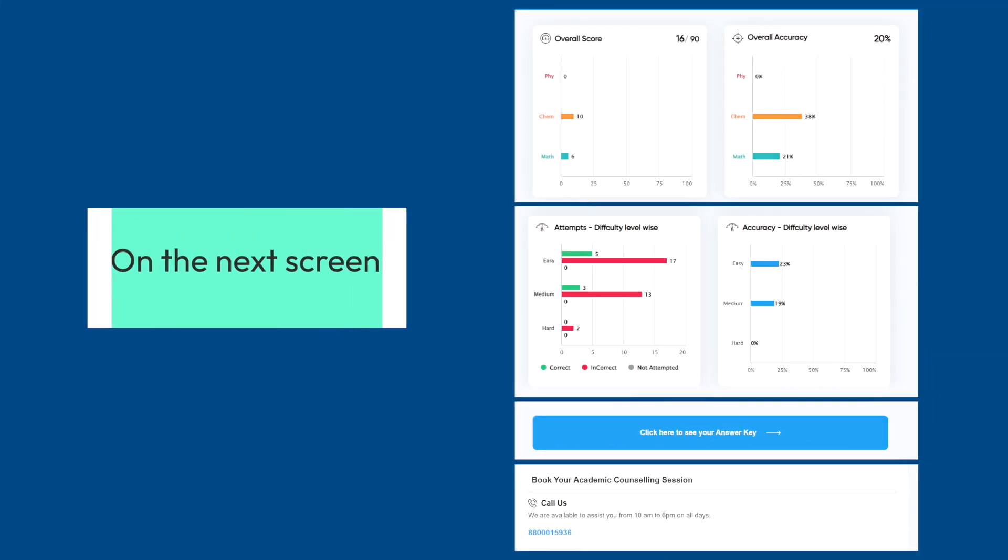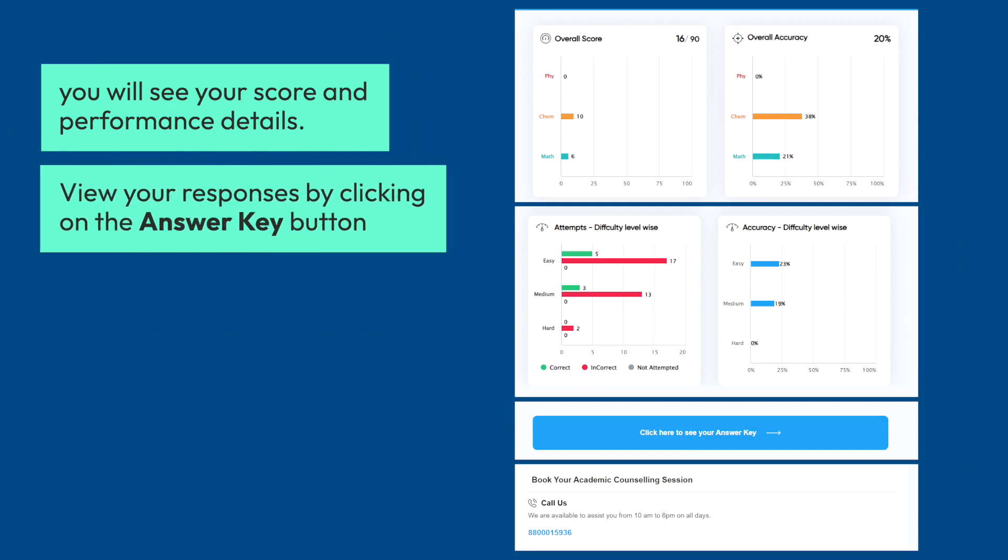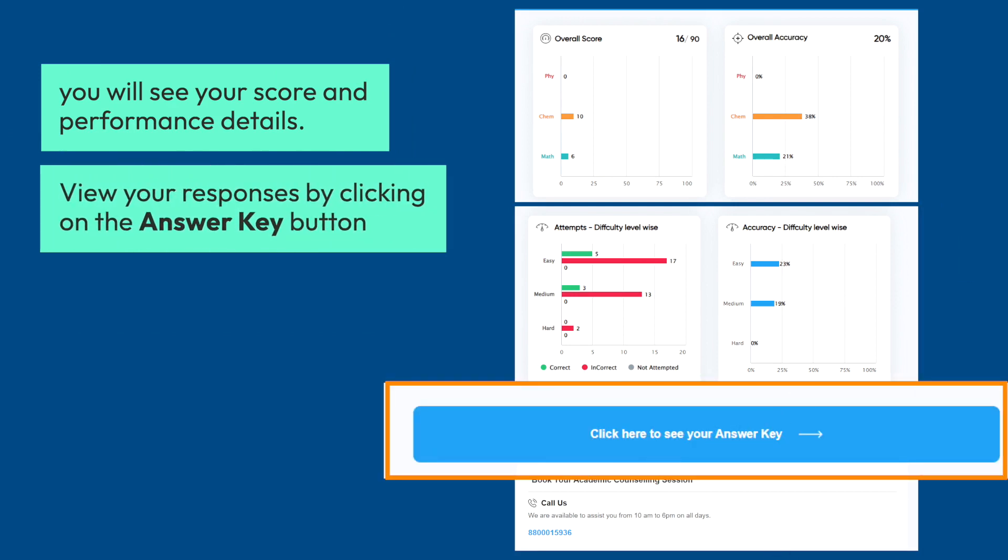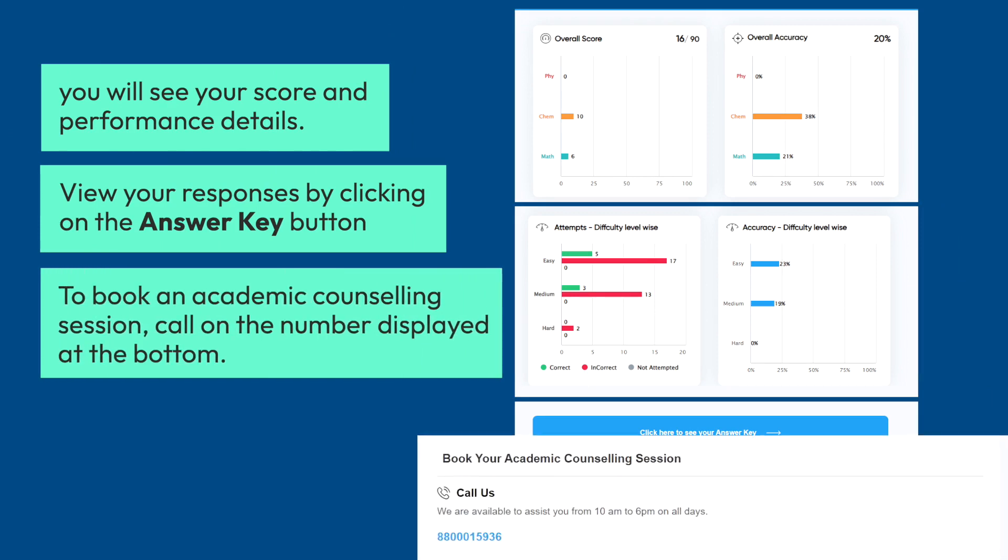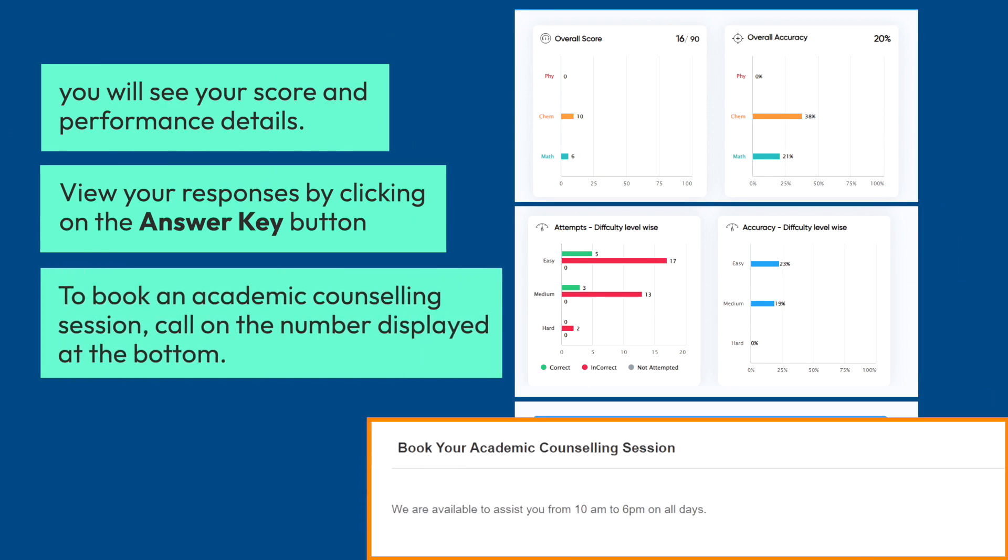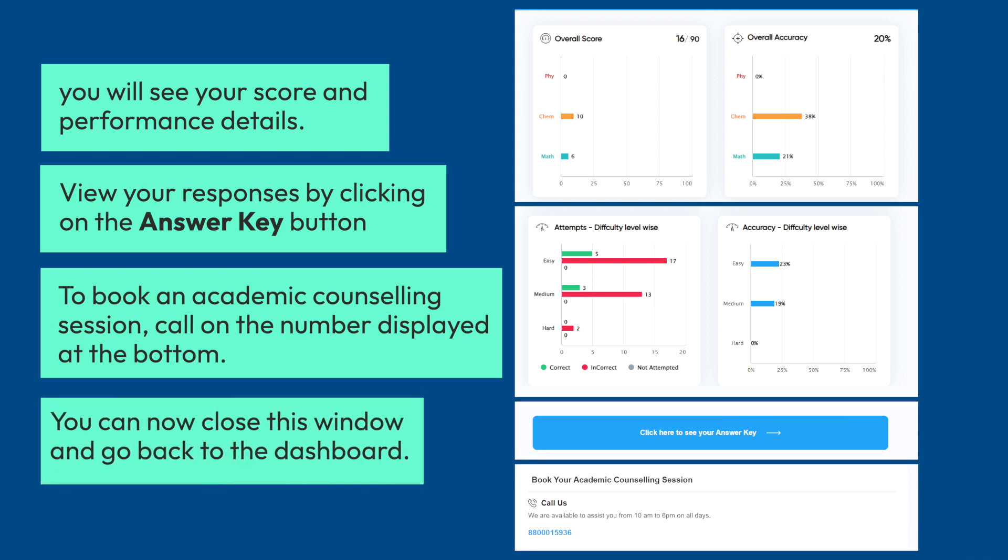On the next screen, you will see your score and performance details. View your responses by clicking on the Answer Key button. To book an academic counseling session, call on the number displayed at the bottom. You can now close this window and go back to the dashboard.